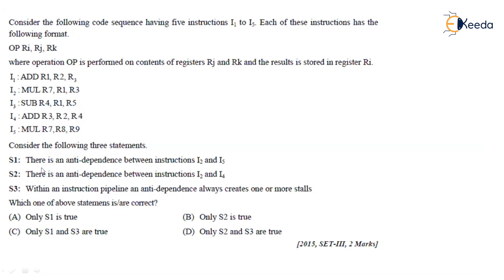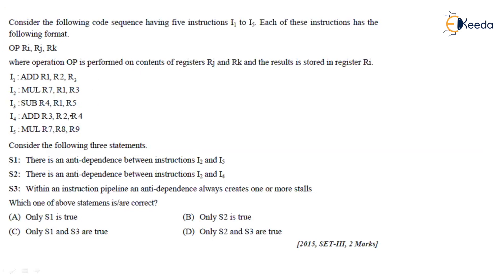The three statements are: S1 — there is an anti-dependence between instructions I2 and I5; S2 — there is an anti-dependence between instructions I2 and I4; and S3 — within an instruction pipeline, an anti-dependence always creates one or more stalls.